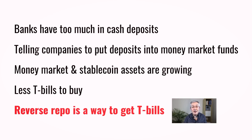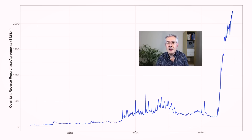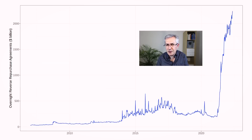So if money market funds want to get their hands on US T-bills, the best way to do that at the moment is to go via the reverse repo market — and that's exactly what we can see happening. Money market funds make up the bulk of demand for reverse repos from the Fed, which is why it's gone above two trillion dollars. I wouldn't be at all surprised if it went up much more.